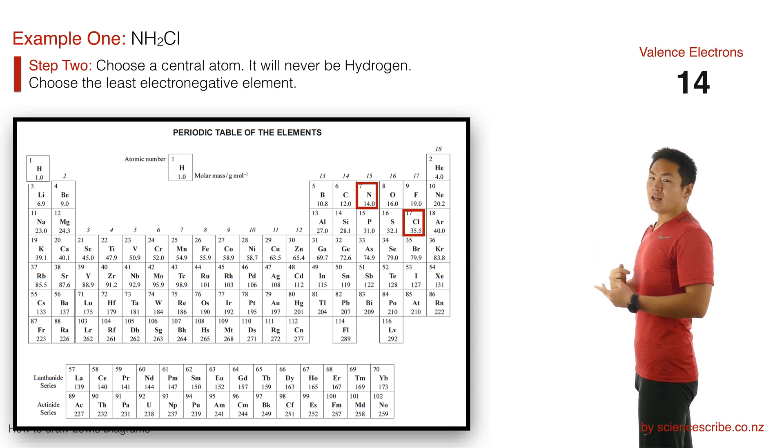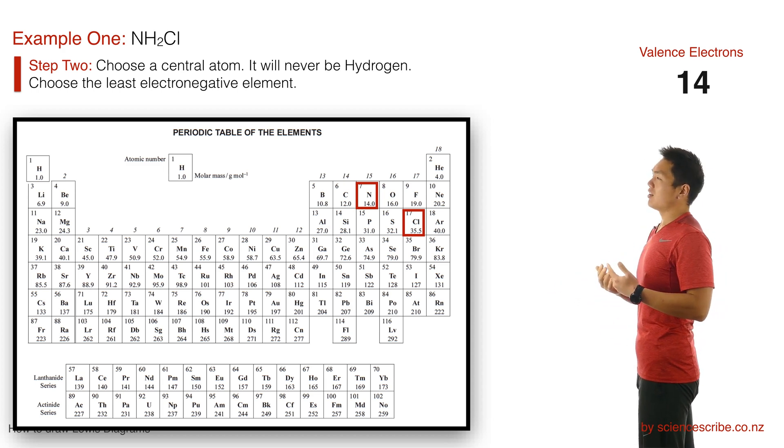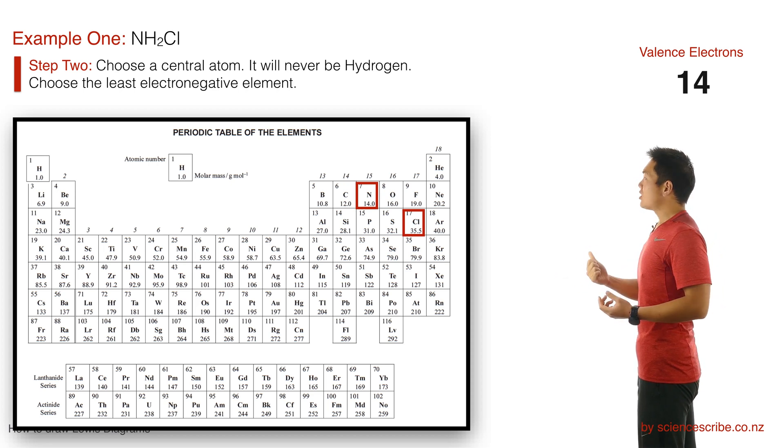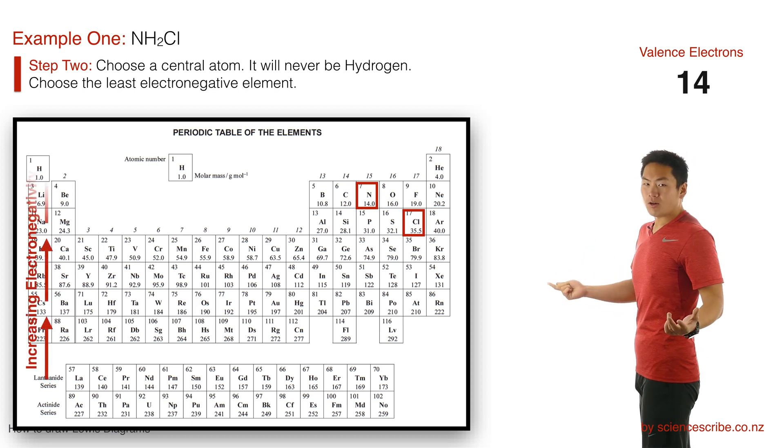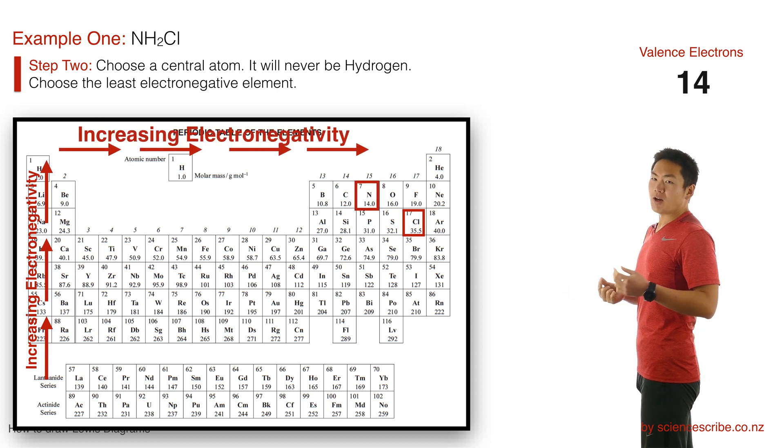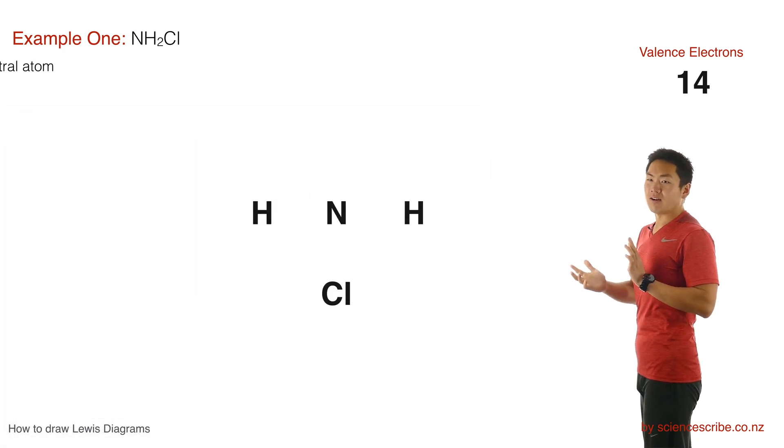Step number 2 is to actually start choosing a central atom. Now, the first thing about choosing a central atom is that it's never, ever, ever going to be hydrogen, so don't put hydrogen in the middle. This means I'm left with a choice of either choosing the nitrogen or the chlorine. If you're left with a choice, you're going to pick the element which is the least electronegative. So we're going to choose nitrogen as our central atom and pop that down, and we're going to put the other elements around it.